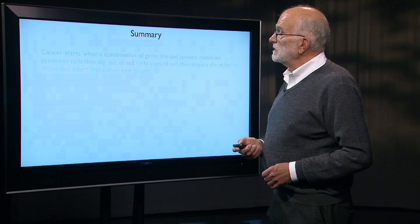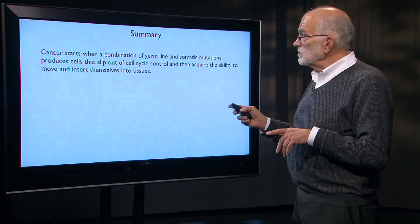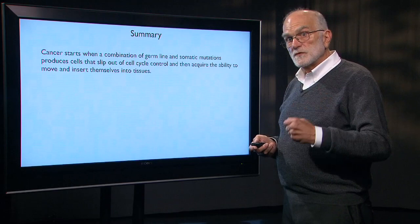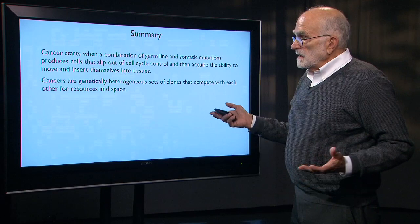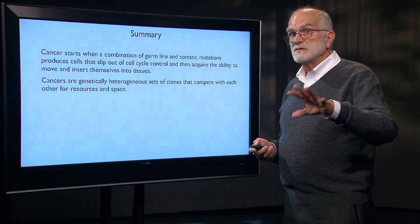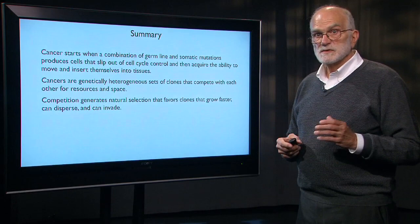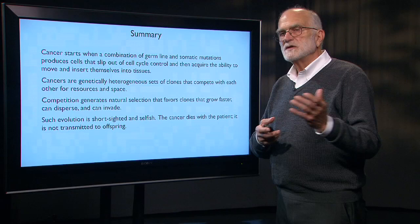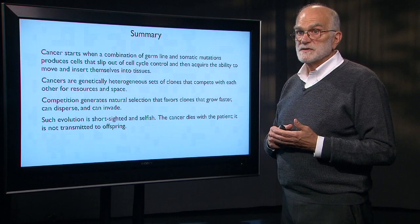To summarize: a cancer starts out when a combination of germline and somatic mutations produce cells that slip out of cell cycle control, and then acquire the ability to move and insert themselves — first they grow inappropriately, then they move inappropriately. Cancers are genetically heterogeneous and clones compete within cancers for nutrients and space. Competition generates natural selection that favors clones that can disperse and invade. This evolution is very short-sighted and very selfish — the cancer will die with the patient, and it is not transmitted to the offspring.